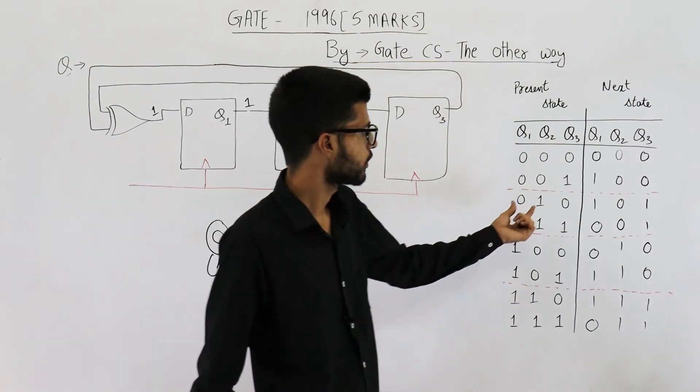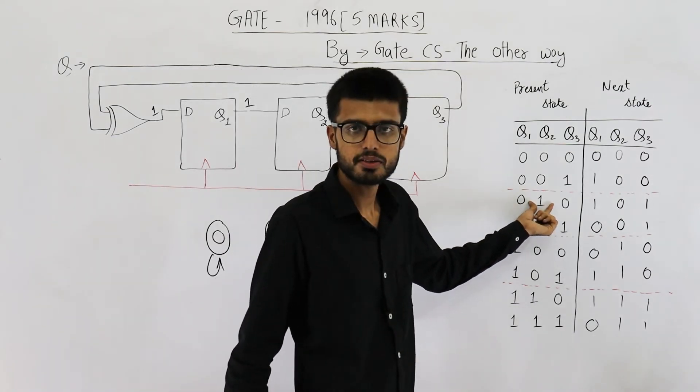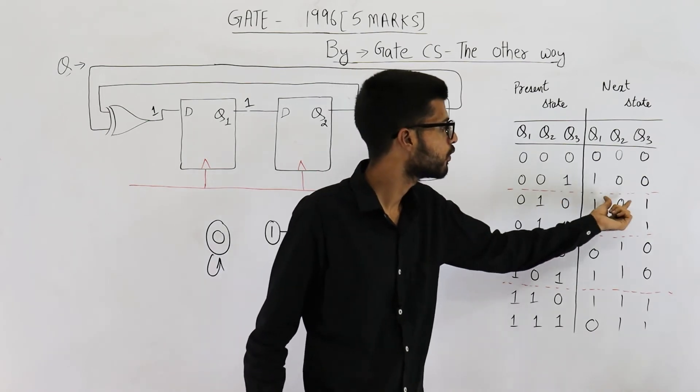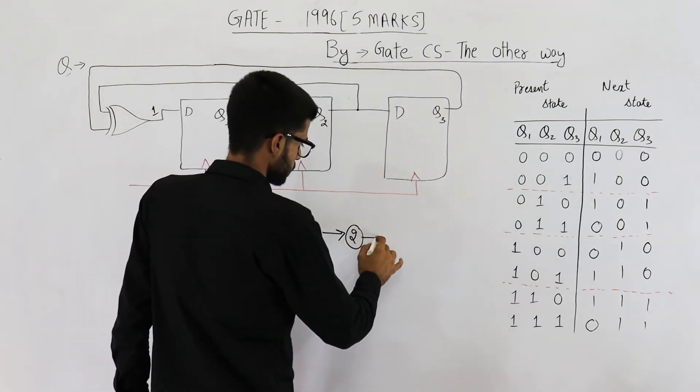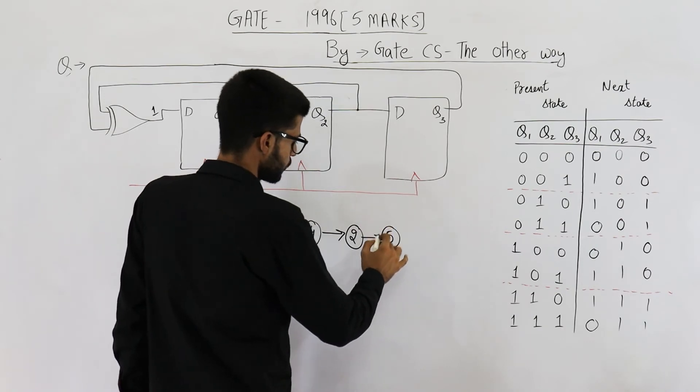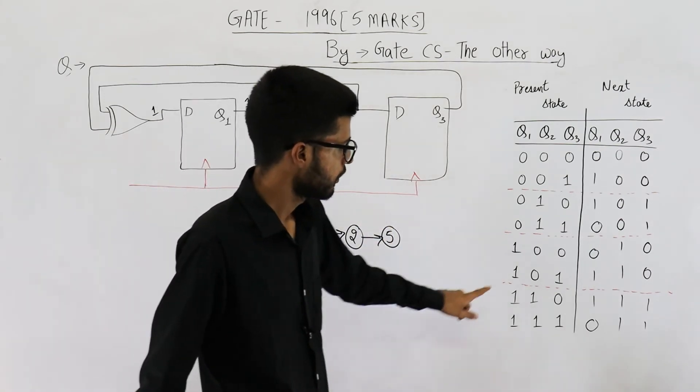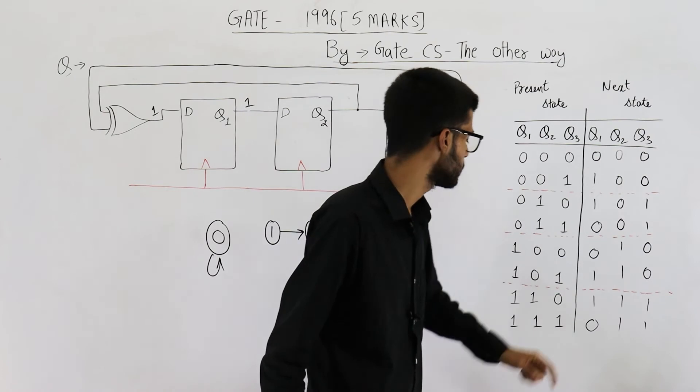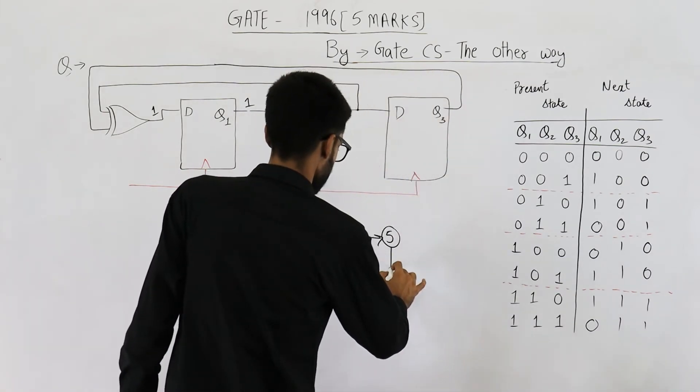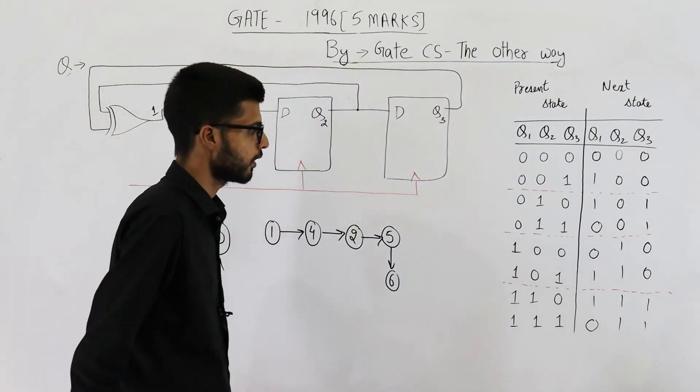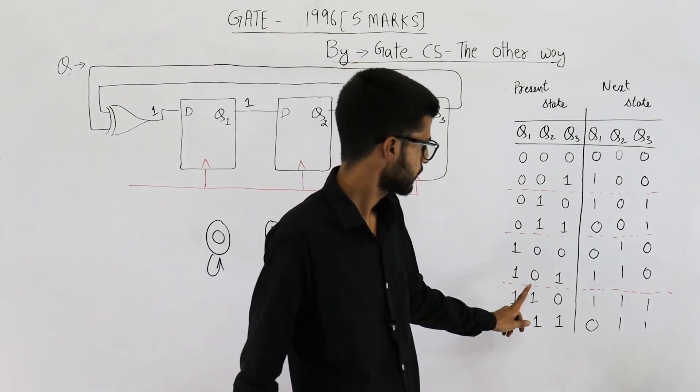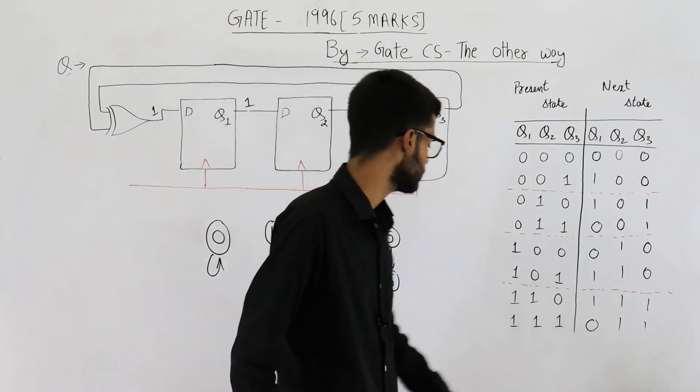Now we have 2 here. Whenever the current state is 2, upon seeing a clock signal, you will go to 5. Here we have 5. The next state will be 6. After this, this is 6. The next state is 7.